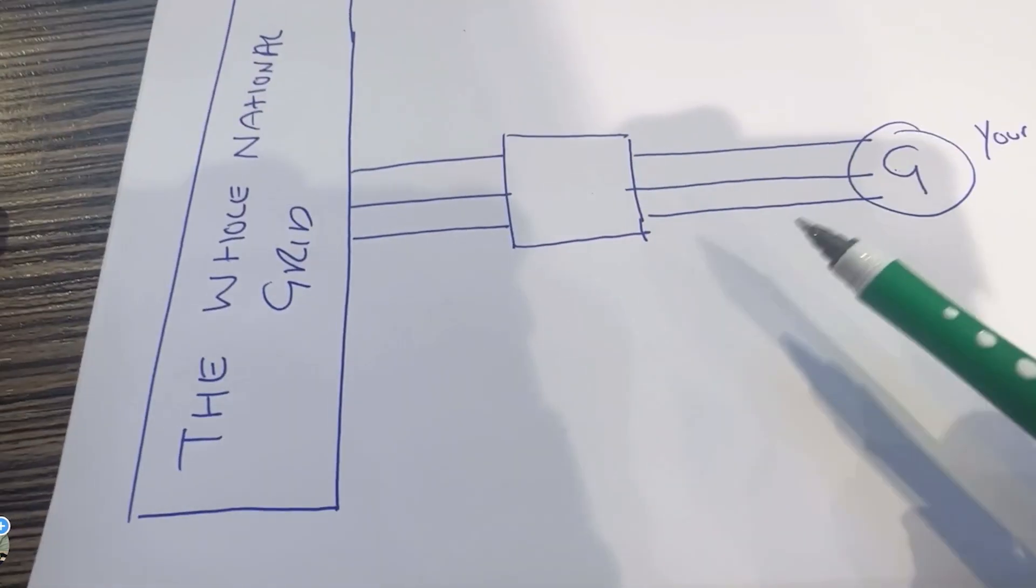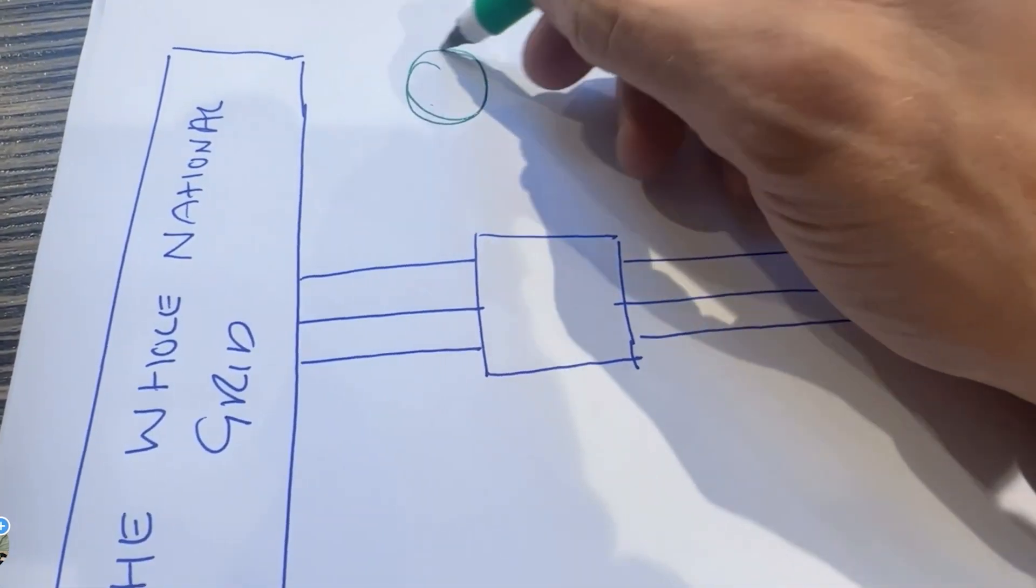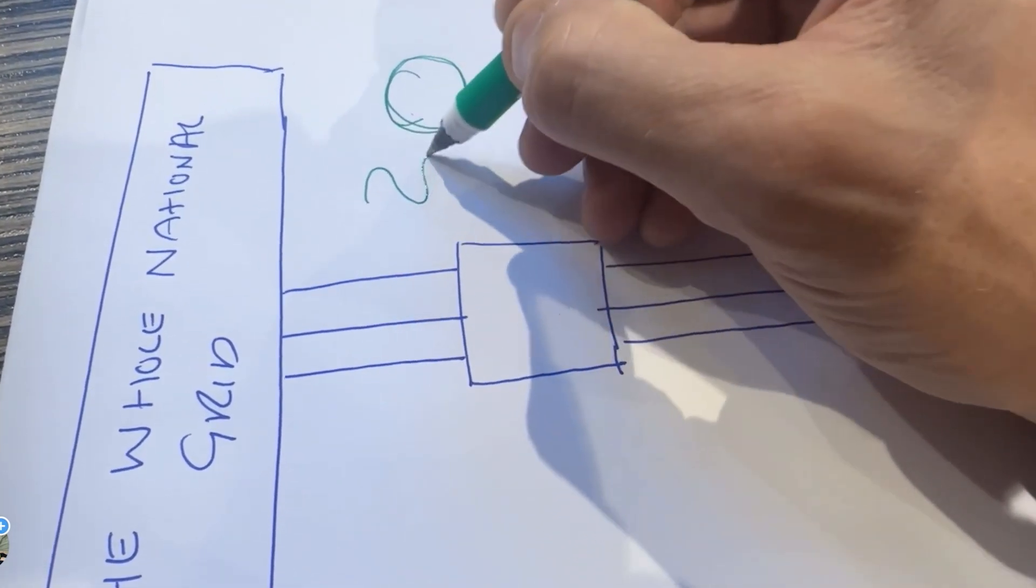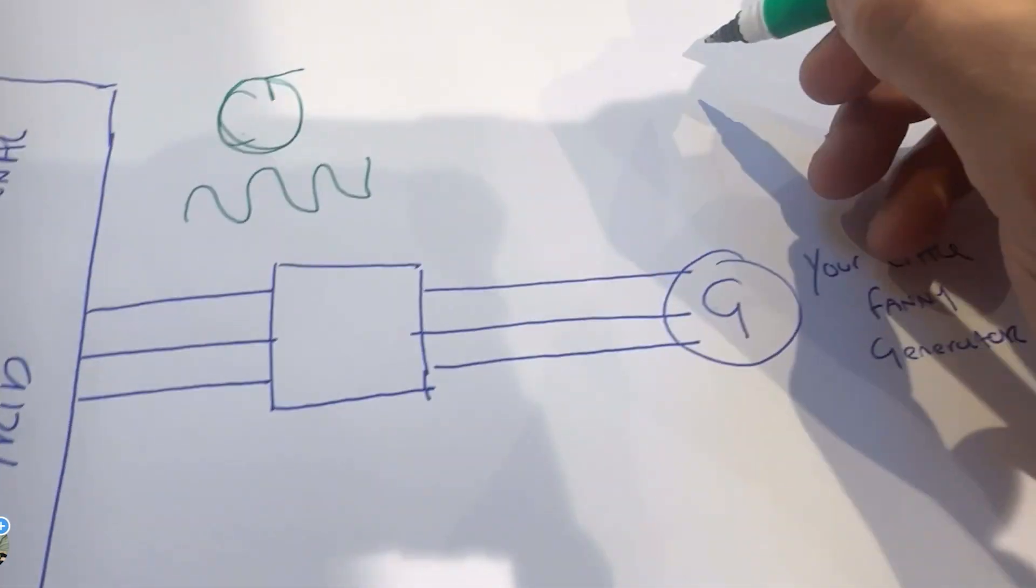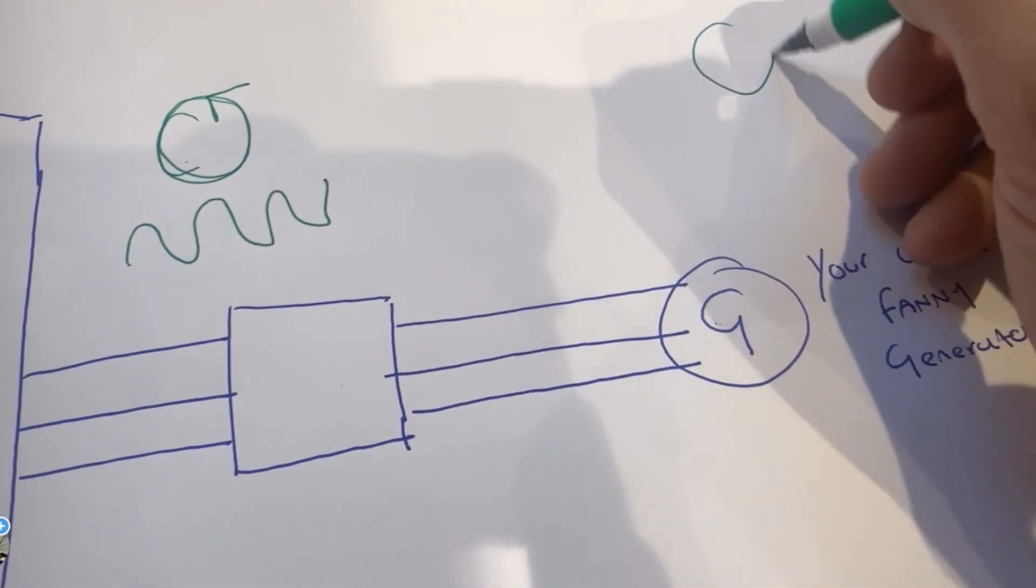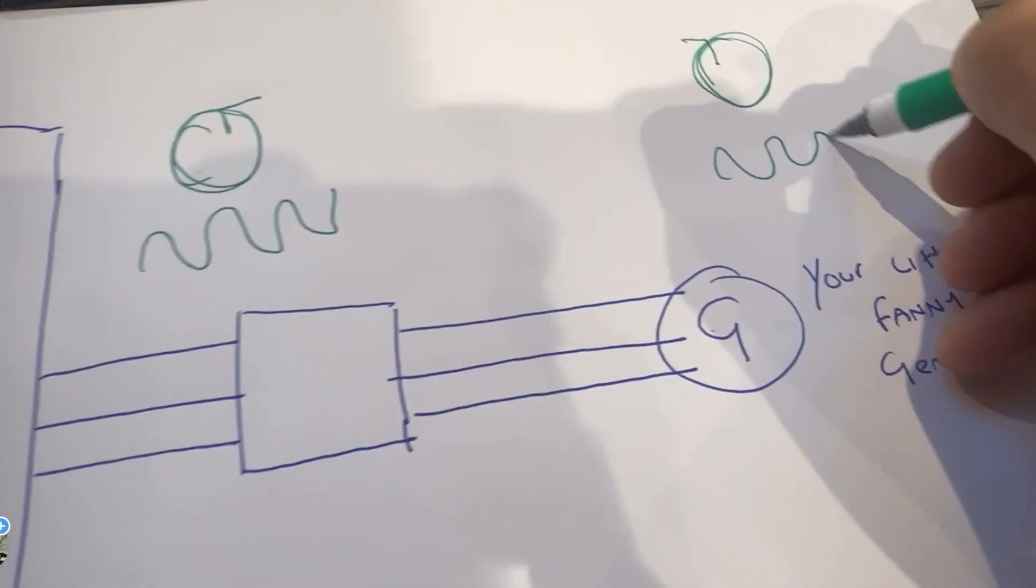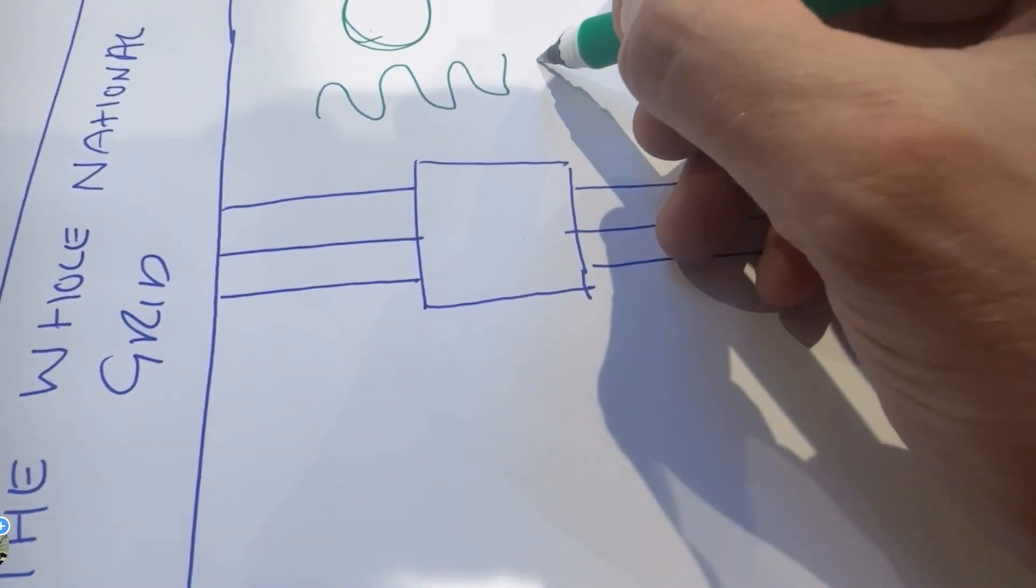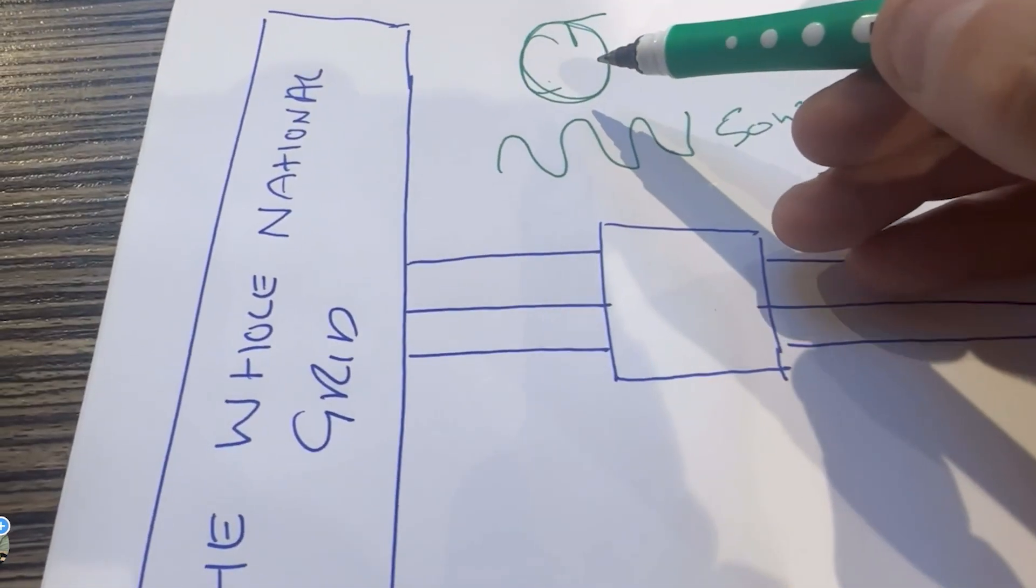What we're saying is the national grid goes round in a direction at a frequency, and your generator goes round in a direction and at a frequency. The national grid frequency is 50 hertz bang on pretty much.